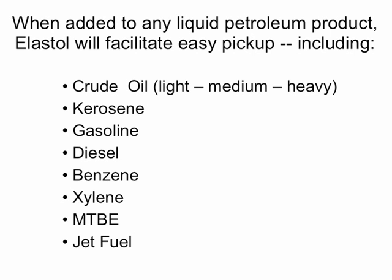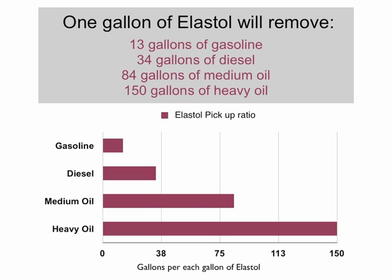Elastal will physically polymerize most petroleum products. The list of oil-based products that Elastal will dissolve into include crude oil of any grade, kerosene, gasoline, diesel, fuel oil, benzene, xylene, MTBE, and jet fuel.